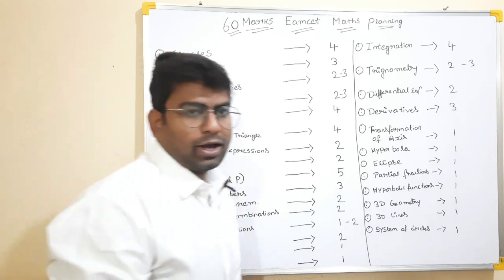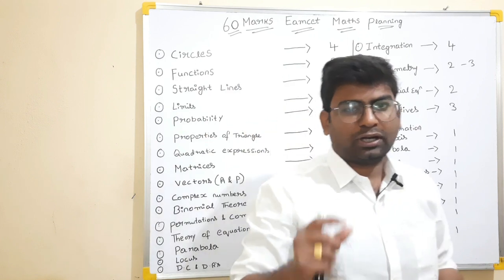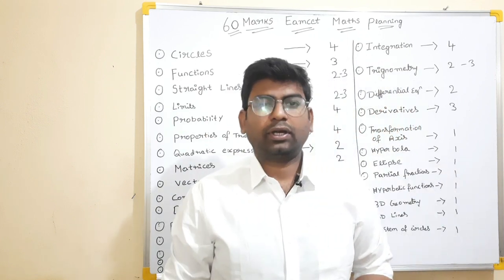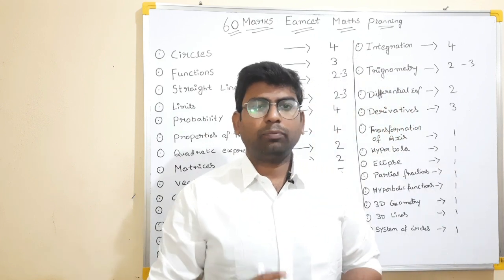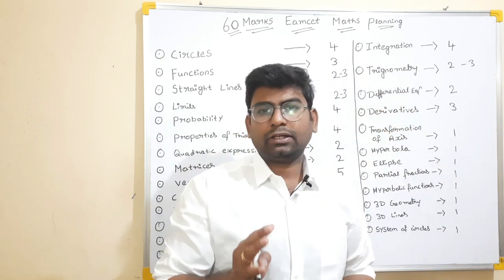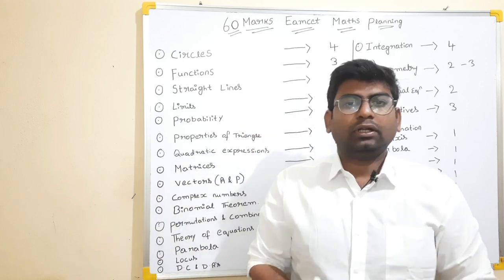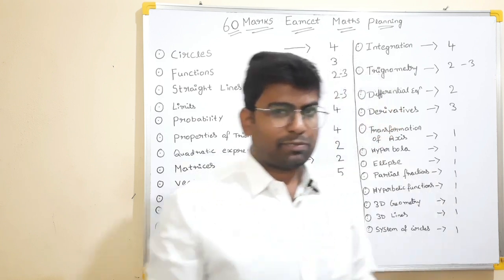40 marks planning is linked to the description of the student. That is why you have to average the easy chapters to the average. The next chapter is 60 marks.